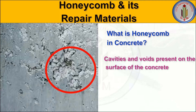Honeycomb in concrete creates a serious issue because it affects the strength and stability of the structure. Once honeycomb is formed, it not only reduces the strength of the concrete but also reduces the bond between the concrete and the reinforcement bar. The reinforcement bar then becomes exposed to the environment and moisture, which creates corrosion. Once corrosion occurs, it leads to collapse of the structural element. So this honeycomb has to be treated properly at the initial stage.